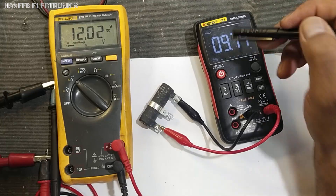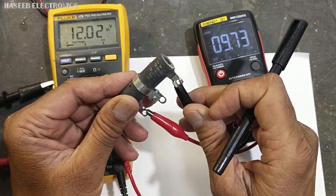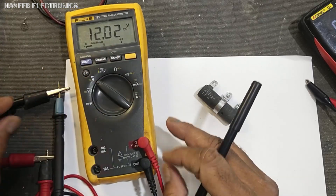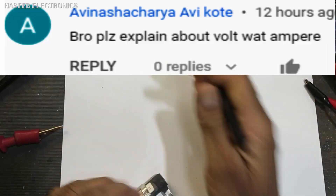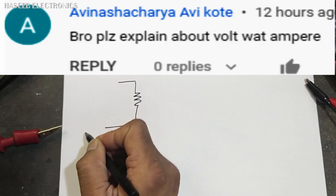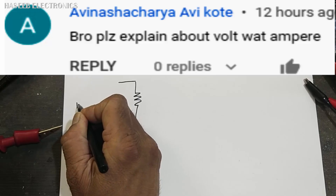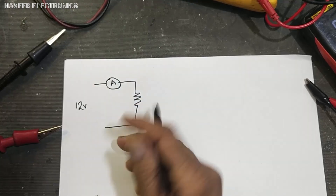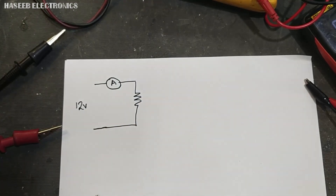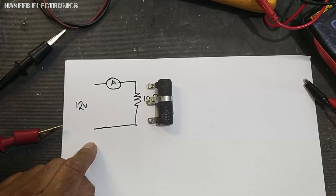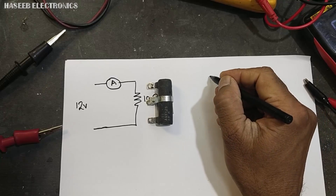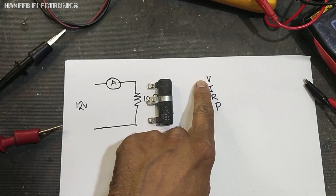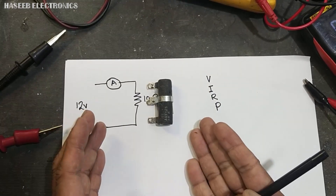Welcome back to my channel. I have this 10 ohm wire wound resistor, 25 watts, and I have 12 volt DC. If you connect this 10 ohm resistor to a power supply — 12 volts — and connect an ammeter, how much current will flow? What is voltage, what is current, what is power? Voltage, current, resistance, and power — these four items we will discuss in this video.